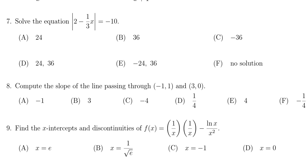In this video we provide the solution to question number seven for the practice final exam for Math 1050. We have to solve the equation where the absolute value of 2 minus 1 third x is equal to negative 10.